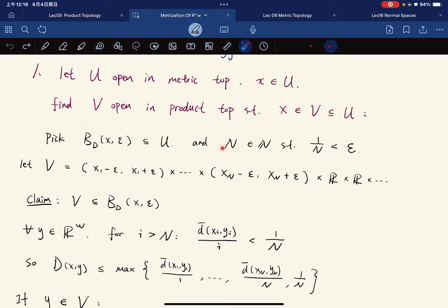And we also pick n, such that this 1 over n is less than ε. Now, let V be the product of (x₁ - ε, x₁ + ε),